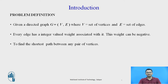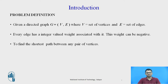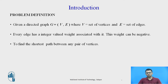So what exactly is the all pairs shortest path problem? In this problem we have a directed graph which is a set of V and E, where V stands for vertices and E stands for a set of edges. These edges are weighted — the graph is weighted and every edge has an integer valued weight associated with it, and this weight of an edge may be positive or negative.